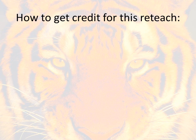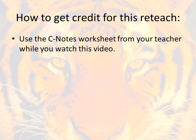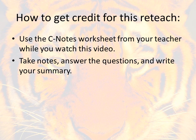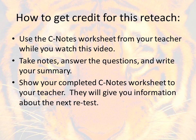First you need to make sure you understand how to get credit for this reteach. Make sure you're using the Cornell Note worksheet that your teacher gave you or sent you to go get. Use that while you're watching this video, make sure it's getting filled out completely, taking notes, answering any questions, and writing your summary. Show your completed Cornell Note worksheet to your teacher when you finish and they will give you more information about your next opportunity to retest.